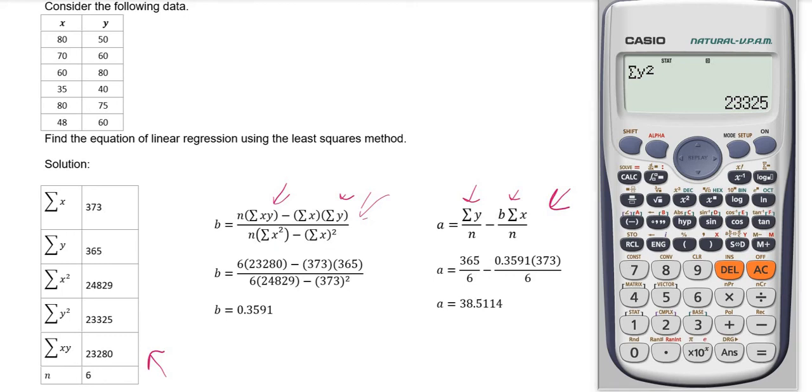The next step is to obtain the A and B values from this calculator. Press the shift button, then press number 1, then press number 5. For B value, you need to choose option number 2. Press number 2 and then press the equal sign button. So this is the value of B.